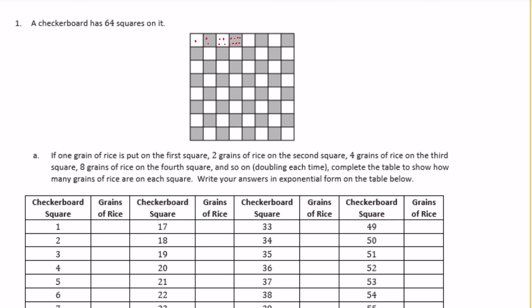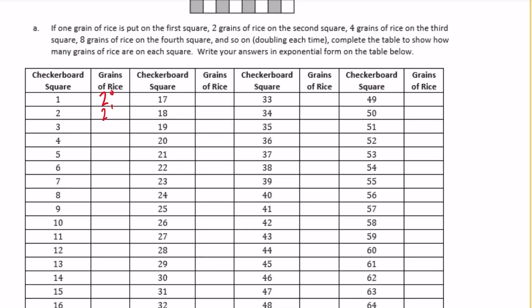The first square is two to the zero power, which equals one. The second square is two to the first power. Two to the second power would be four, two to the third power would be eight, and we just keep increasing the exponent by one every single time, so it takes a bit to fill in this chart.